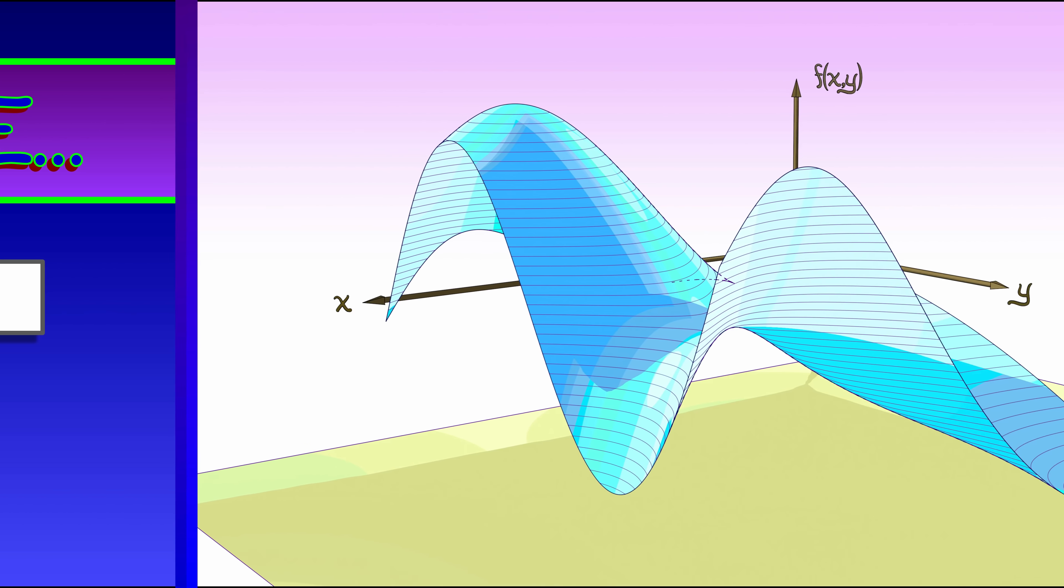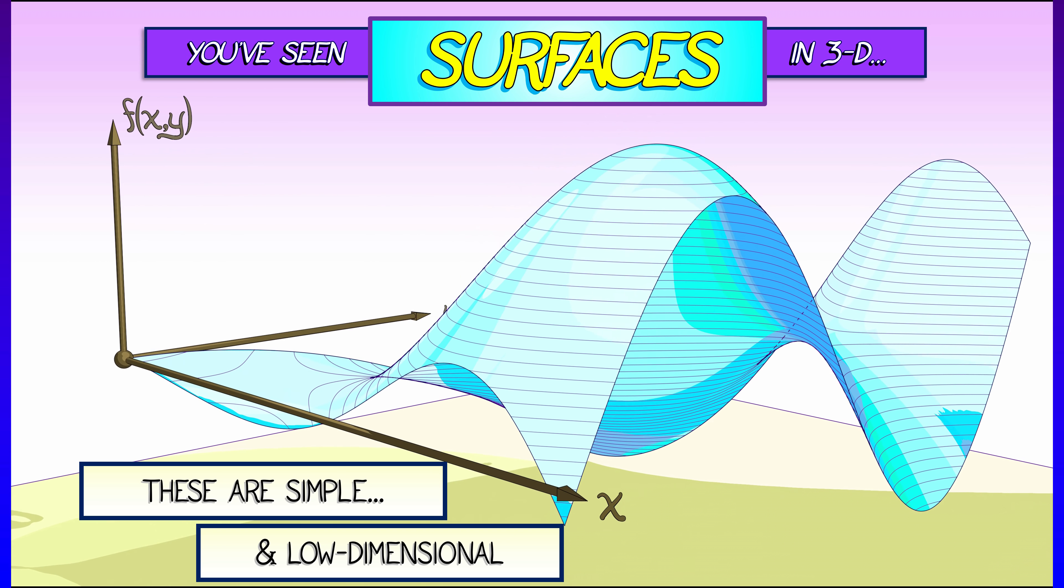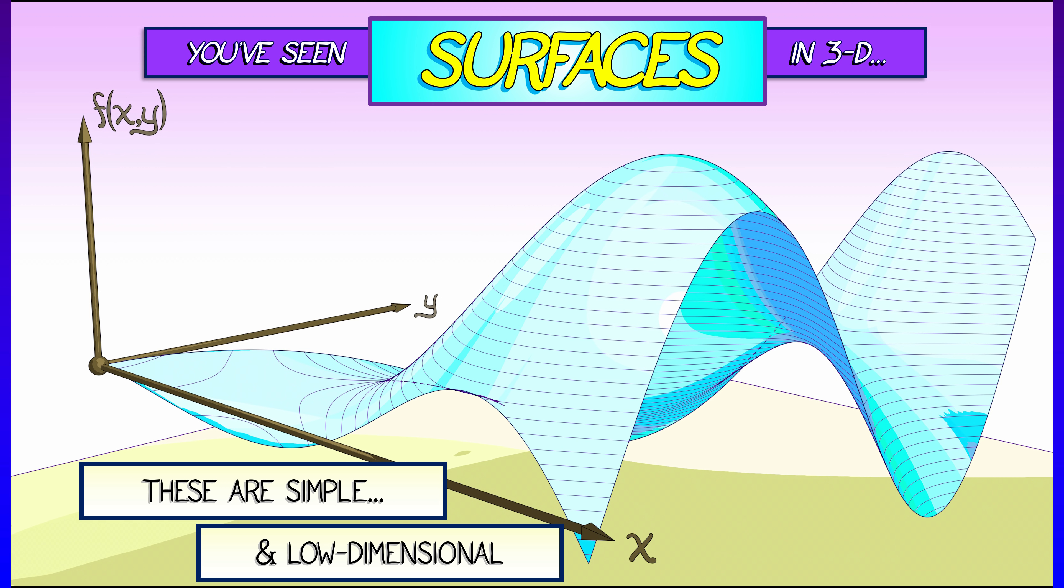In fact, if you look around, you're going to see them all over the place. One of the simplest examples comes from surfaces. Graphs of functions with, say, two inputs and one output.